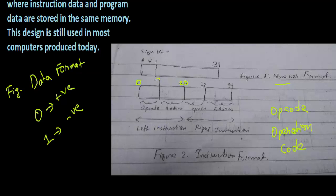0 to 8 stores the op code, and 8 to 20, that's 12 bits, stores the address. Again, 20 to 28 is op code, and this again stores the address. This is known as the left instruction and this side is the right instruction. The memory of IAS consists of 1000 storage locations called words, each consisting of 40 bits. That is very important.